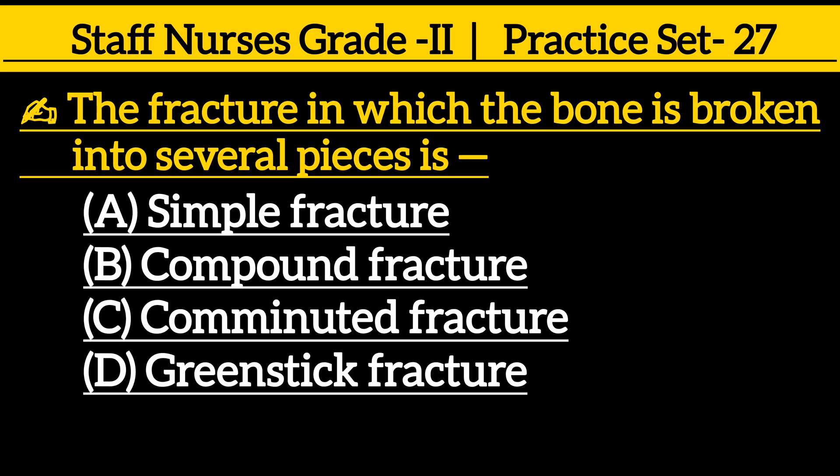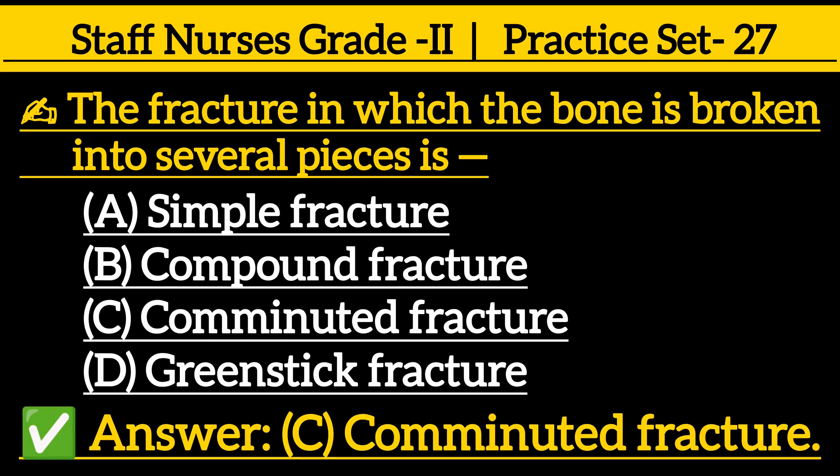Next one: the fracture in which the bone is broken into several pieces is — option A: Simple fracture, option B: Compound fracture, option C: Comminuted fracture, option D: Greenstick fracture. Correct answer is option C: Comminuted fracture.